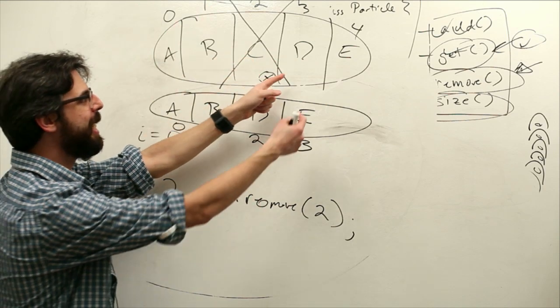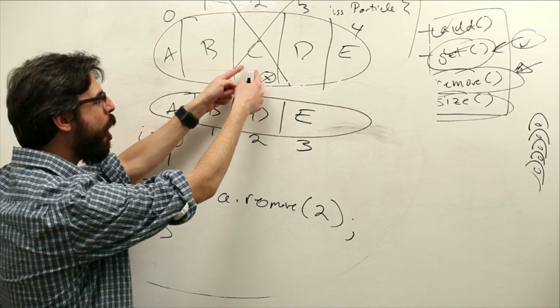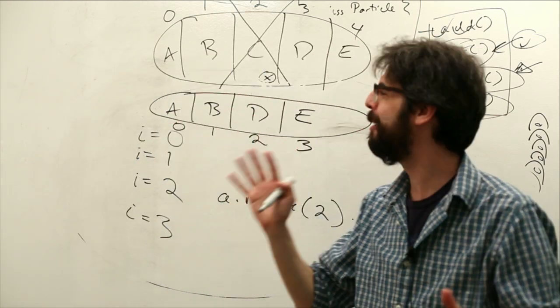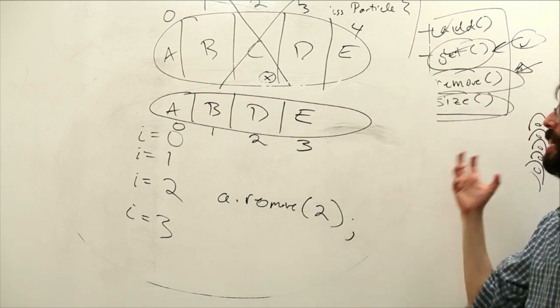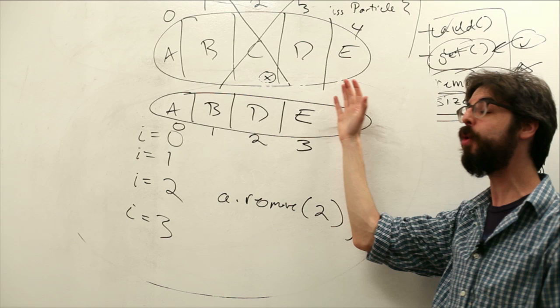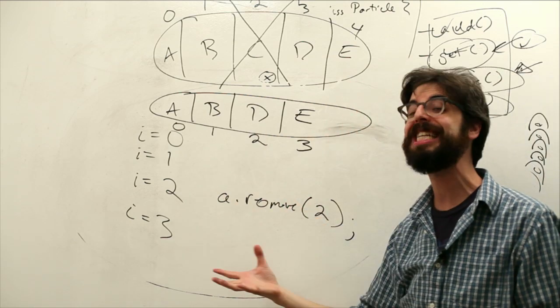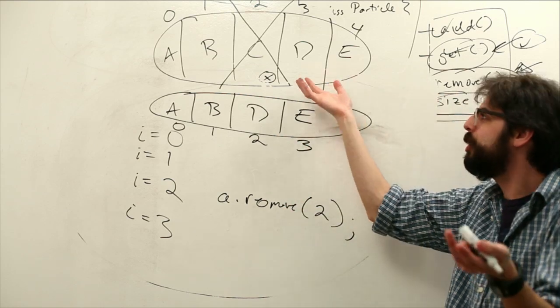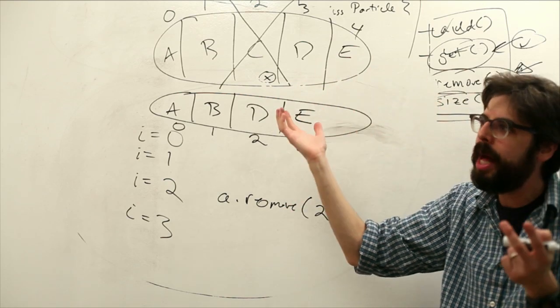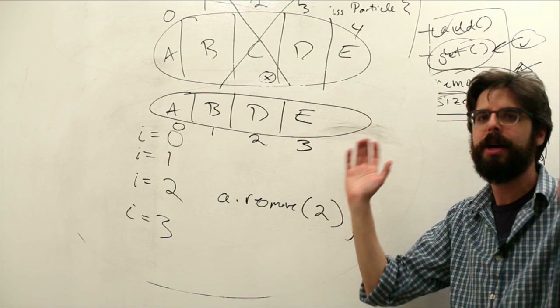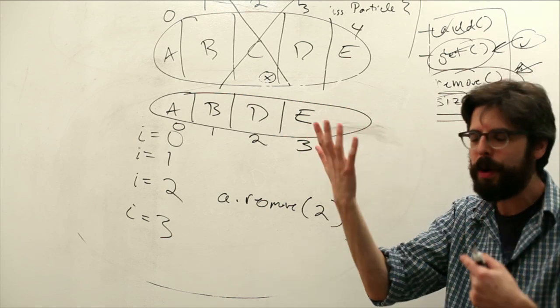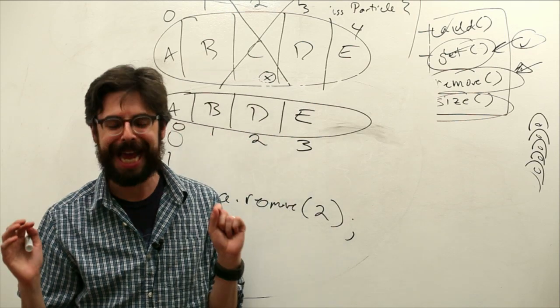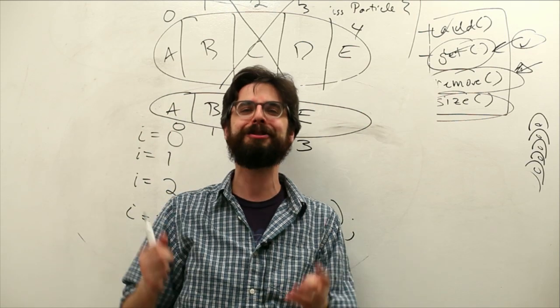We removed it. D slid over. So we're not checking D. We're checking E next. So what's happening here? Because of the way the elements slide over as we're looping forward through the Array, we could be skipping them by accident. Now in the end, it doesn't really matter. Maybe we didn't check D and we didn't display it. We'll display it next time. Big deal.